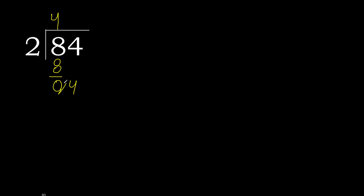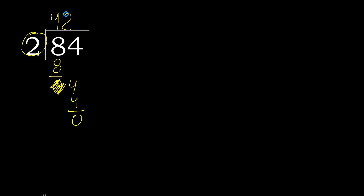Next, bring down the 4. 2 multiplied by 2 is 4, which is not greater. 4 minus 4 is 0. The remainder is 0 and there are no more digits, therefore we are finished. 84 divided by 2 is 42.